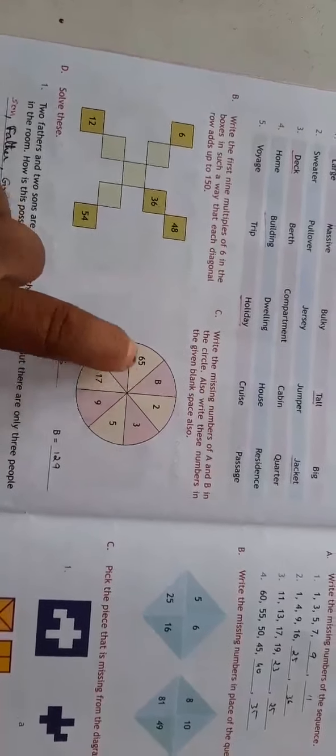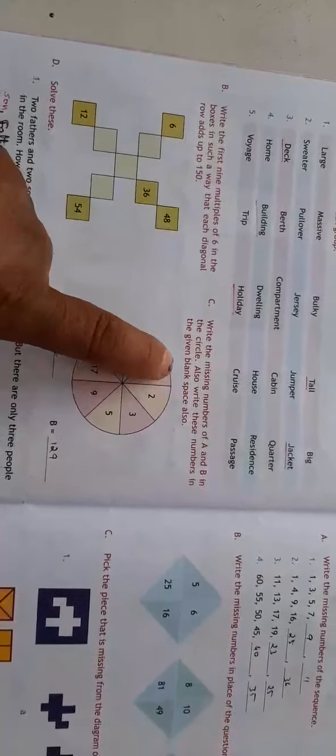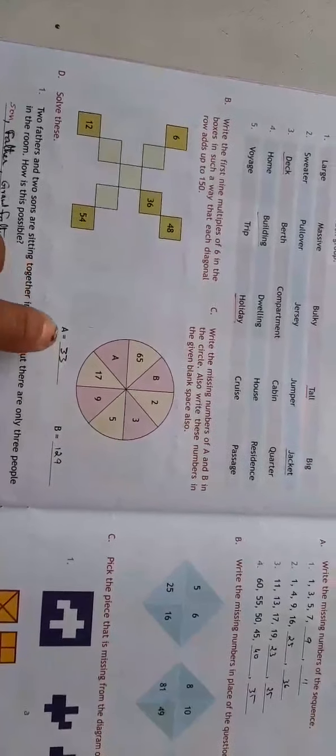In this case, a circle is there. A circle means 360 degrees. Two are not been given, A and B. So the numbers which are coming, A is 33 and B is 129.